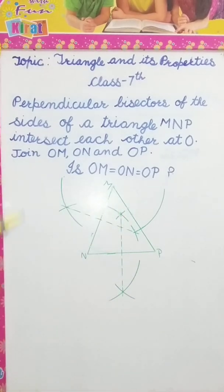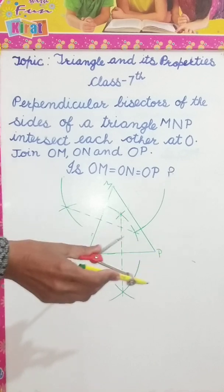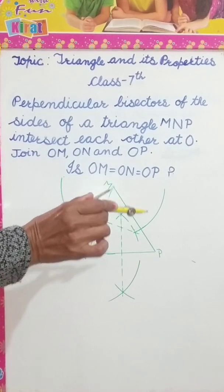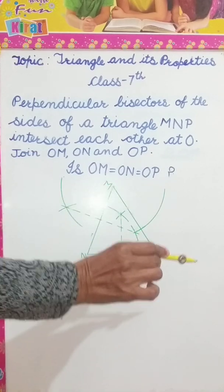Now, I have to draw a perpendicular bisector of MP. Now, I will take M as a center and P as a center.